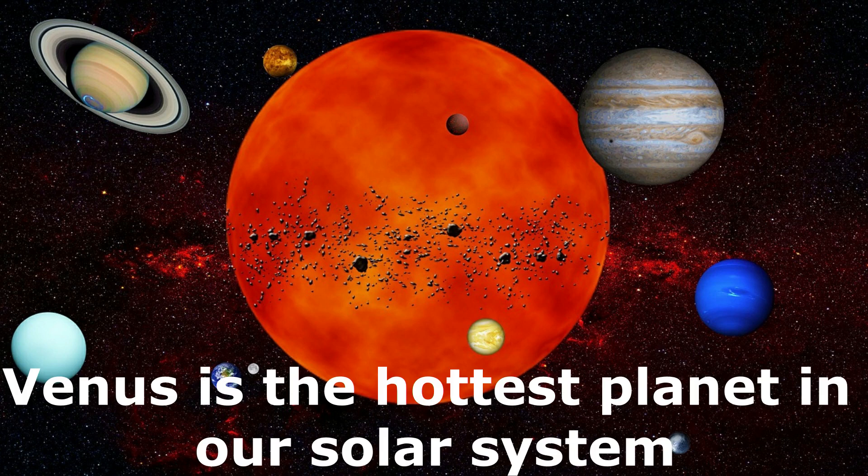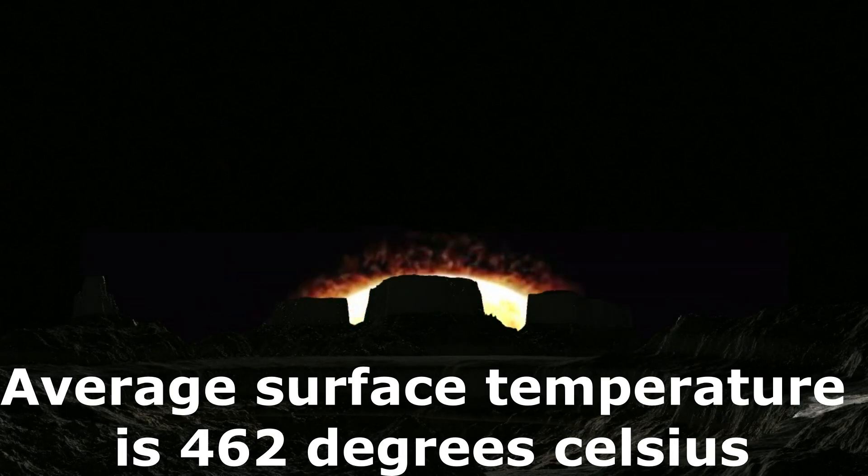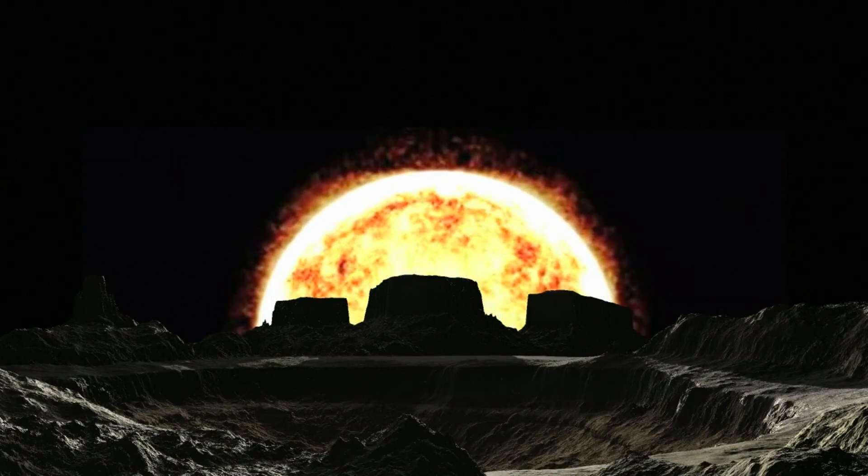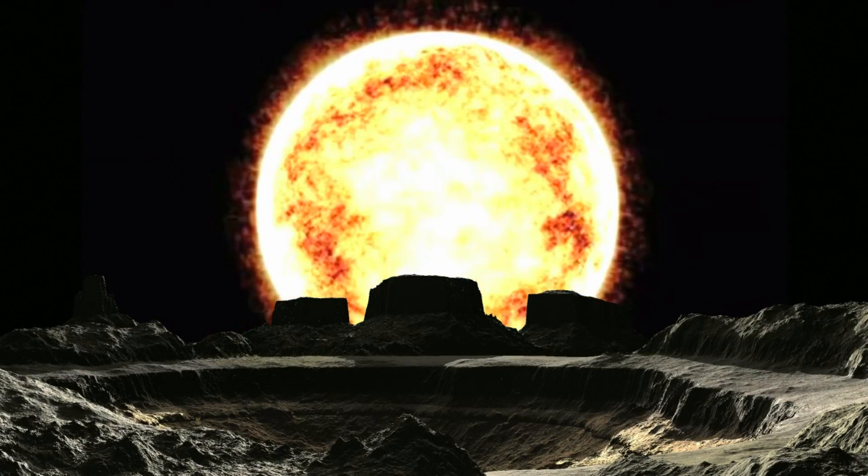Venus is the hottest planet in our solar system. Its average surface temperature is 462 degrees Celsius. But now you may ask, why is planet Venus the hottest, not Mercury, as Mercury is the nearest planet to the Sun?